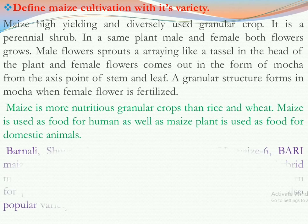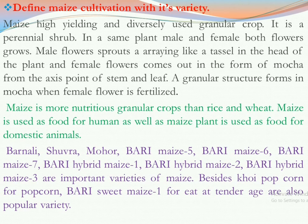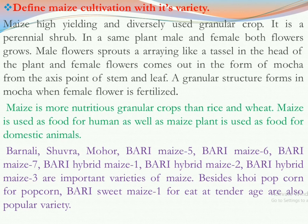Now let us know the varieties of maize. Bernali, Shubra, Mohon, Bari Maize 5, Bari Maize 6, Bari Maize 7, Bari Hybrid Maize 1, Bari Hybrid Maize 2, and Bari Hybrid Maize 3 are important varieties. Besides, Khoi popcorn for popcorn and Bari Sweet Maize 1 for sweet varieties are also popular. These are the famous and popular varieties in our country.